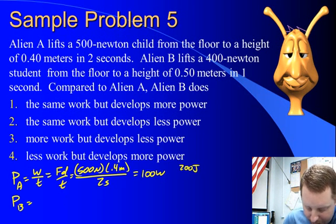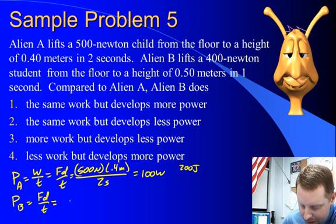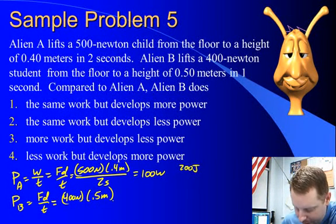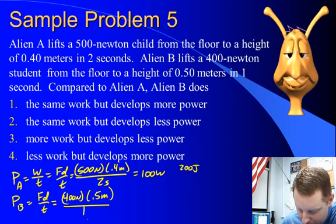Alien B can use the same formula, force times displacement over time. 400 newtons, a displacement of 0.5 meters. That's going to be 200 joules in a time of 1 second.